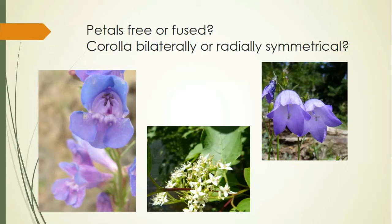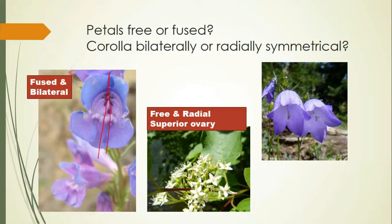Let's try a few more. Penstemons are beautiful — we can see that they are bilaterally symmetrical and they're definitely fused, with that long tube that limits which pollinator can get in there. The dogwood is free and radially symmetrical. You can also nicely see the superior ovary on this one, with the style and stigma coming up off of it. And that last one — those petals are clearly fused on the harebell and radially symmetrical. A beautiful example of that one.